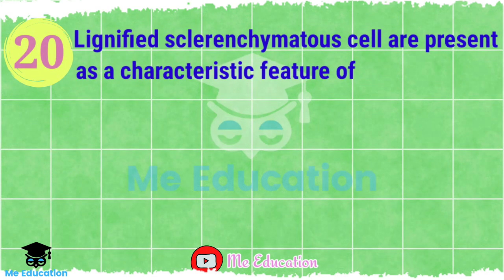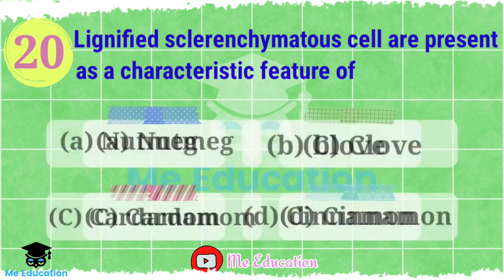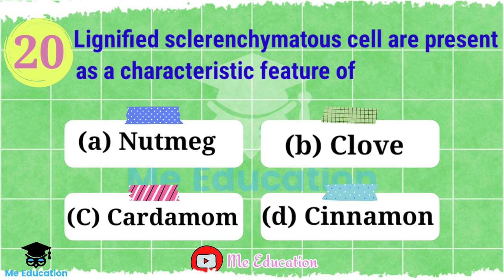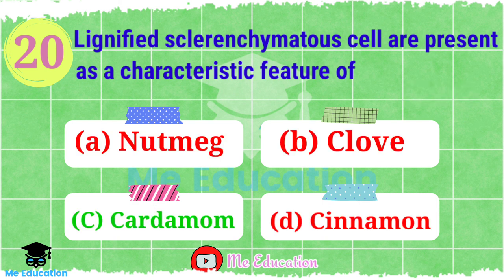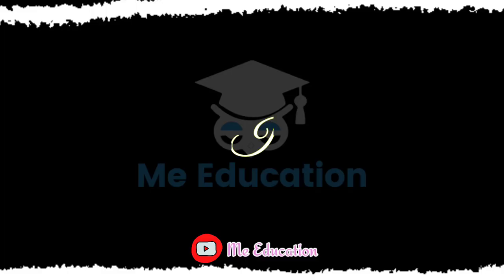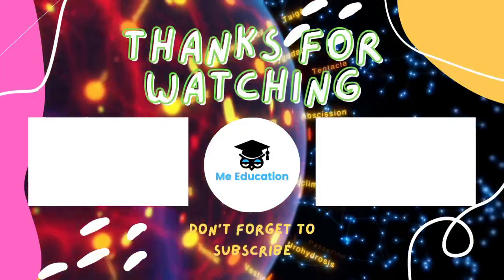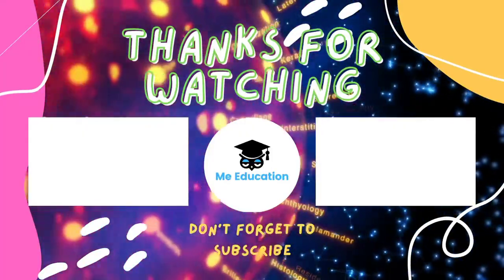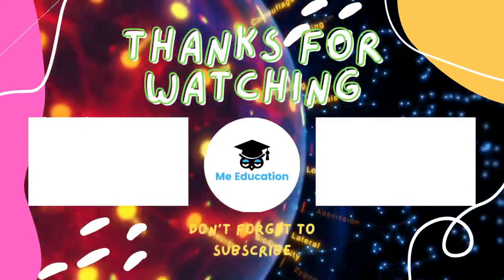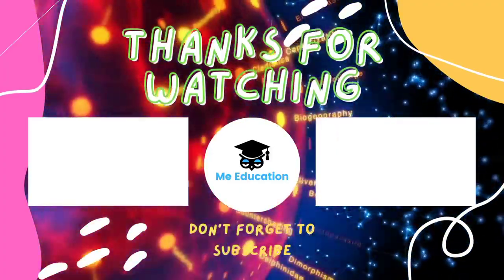Question number 20 (last question): Lignified sclerenchymatous cells are present as a characteristic feature of — Option A: nutmeg; Option B: clove; Option C: cardamom; Option D: cinnamon. Pause the video and try to answer this question. The right answer is Option C, cardamom. Thank you.